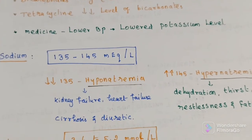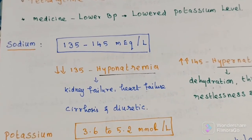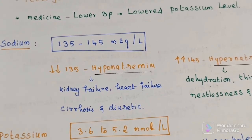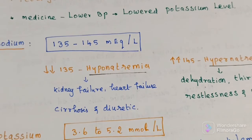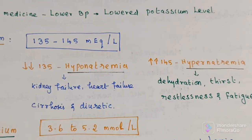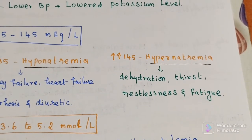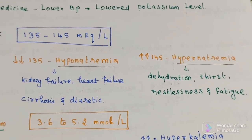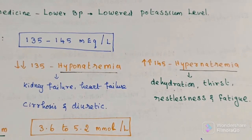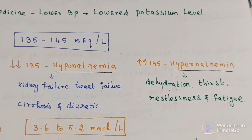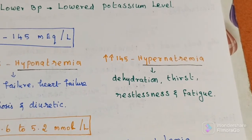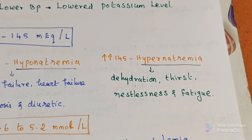Now we will discuss the normal range of electrolytes. First, sodium: the normal range is 135 to 145 milliequivalents per liter. A decreased condition is called hyponatremia; an increased condition is called hypernatremia. Decreased sodium is caused by kidney failure, heart disease, cirrhosis, and diuretics. Hypernatremia symptoms include dehydration, thirst, restlessness, and fatigue.